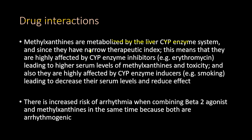Methylxanthines are metabolized by the liver CYP enzyme system. Because they have a narrow therapeutic index, they are highly affected by CYP enzyme inhibitors such as erythromycin, leading to higher serum levels and toxicity. They are also highly affected by CYP enzyme inducers such as smoking, leading to decreased serum levels and reduced effects. There is also increased risk of arrhythmia when combining beta-2 agonists with methylxanthines, since both are arrhythmogenic.